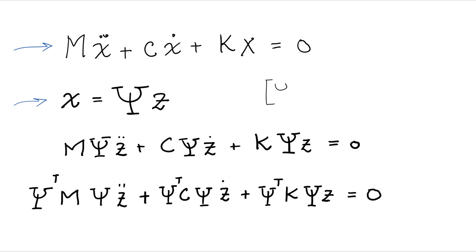So phi times psi, as we've discussed before, is simply a matrix that has all the mode shapes as columns. And z are the modal coordinates. So the response of x in time is simply the sum of mode shapes times the time response of the modal coordinates.